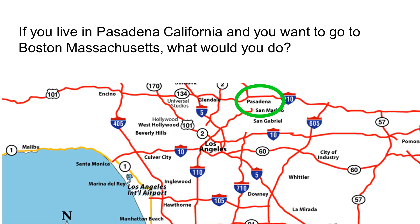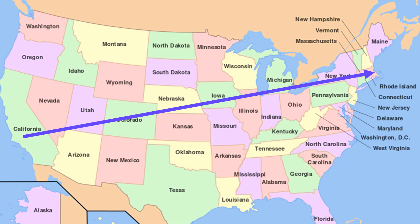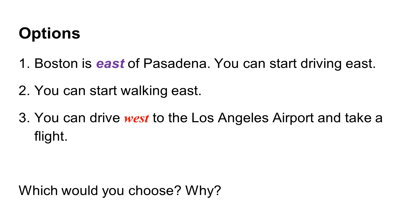Consider another situation. You live in Pasadena, California and you want to go to Boston. If you are not familiar with the geographical locations, California is at the west coast and Boston is at the east coast. You have many options: the first is to start driving east, the second is to start walking east, and the third is to drive west to the Los Angeles airport and take a flight. Which one would you choose?